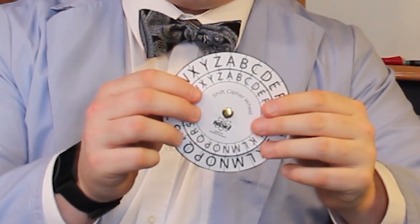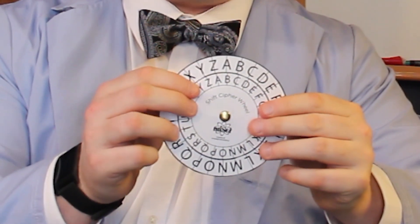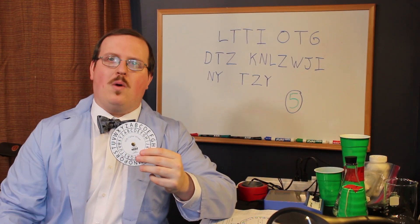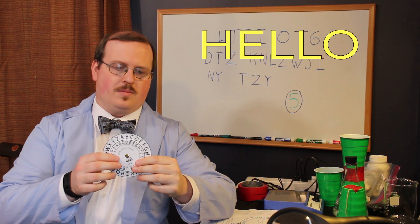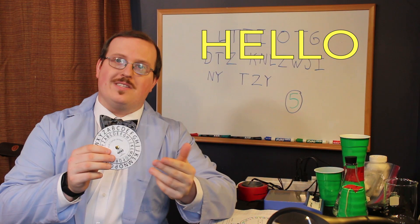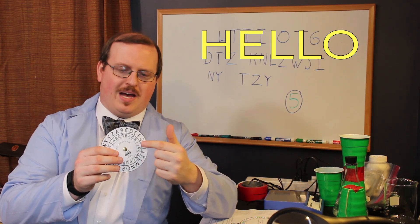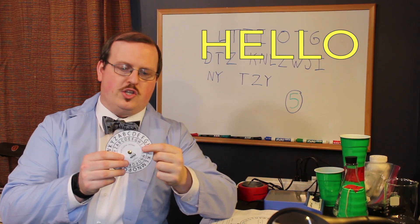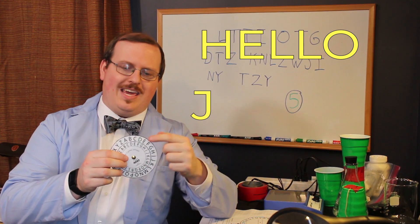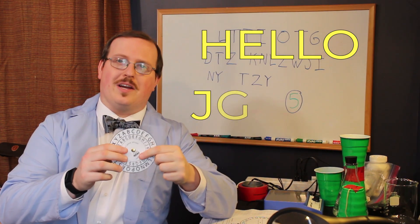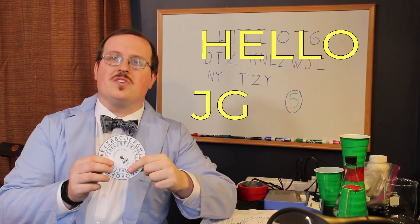Now if we wanted to have a shift of two, what I would do is move my inner wheel two spaces to the side. So now I can write my message. Say I wanted to write the word hello. Well, I'd go to the first letter H. H becomes a J, so I'd write down J. Then the next one is E. E becomes a G, so I'd write down G, and so on and so on.